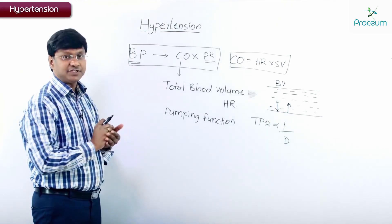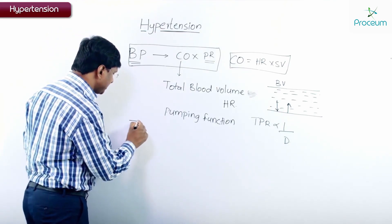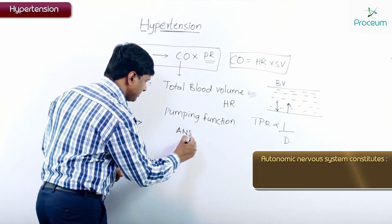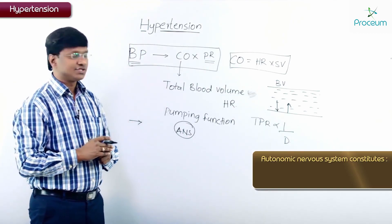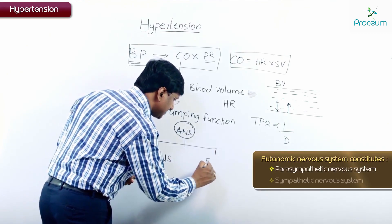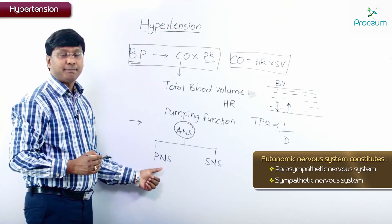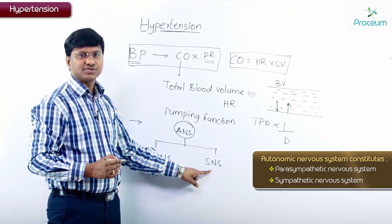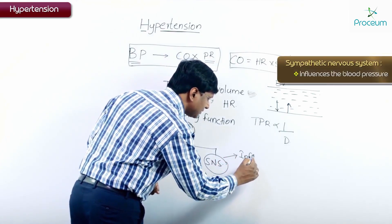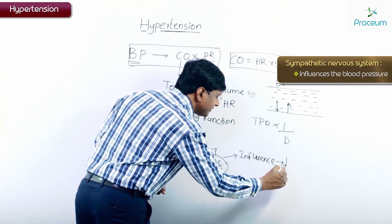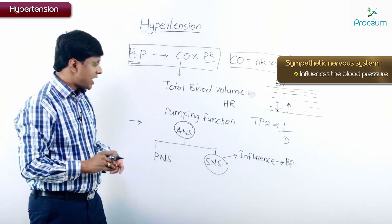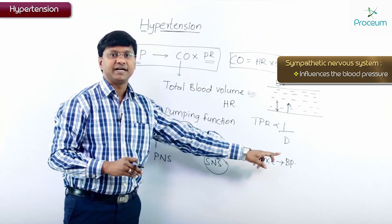This is the basic definition of blood pressure. Another important thing is we have what is called the autonomic nervous system in our body. This particular autonomic nervous system constitutes two things: the parasympathetic nervous system and the sympathetic nervous system. The sympathetic nervous system will influence the blood pressure of the individual.